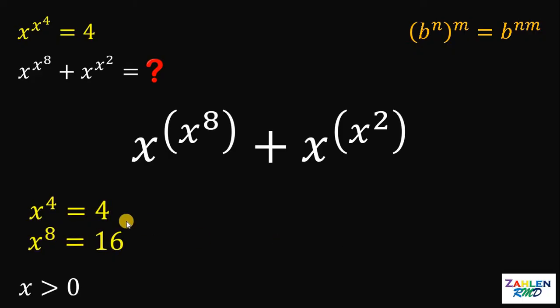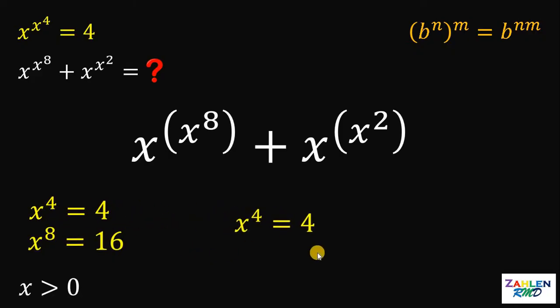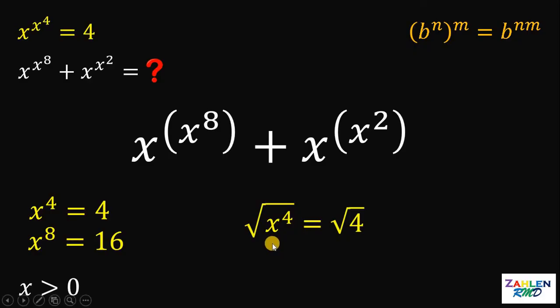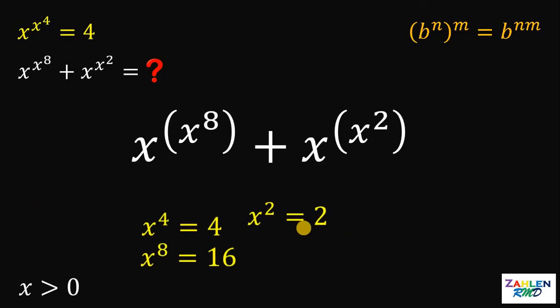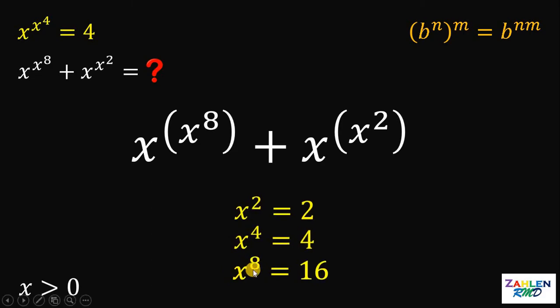Again, taking the equation x raised to the fourth power equals 4, if we take the square root on both sides, the left-hand side is just x squared and the right-hand side is just 2. Now we have the value for x squared, x raised to the fourth power, and x raised to the 8th power.